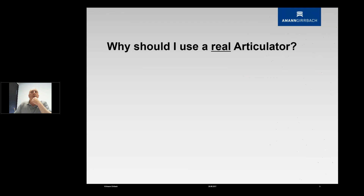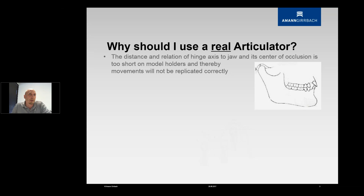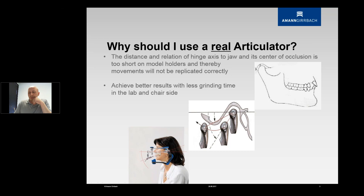So why should I use a real articulator — meaning a full-size articulator and not just a model holder? The answer is pretty simple. A real articulator has a completely different size, and the relation between the hinge axis and the center of occlusion is going to be too short on a model holder or quadrant model. Therefore the movements are going to be very different, and you can expect better results using an actual articulator. We want to achieve better results in the lab and chairside, and of course save some time and money.